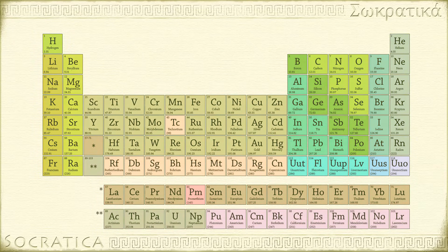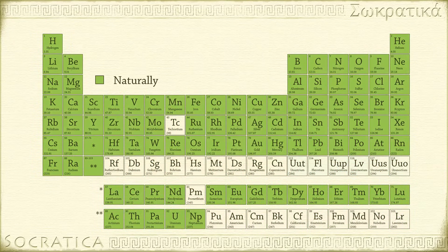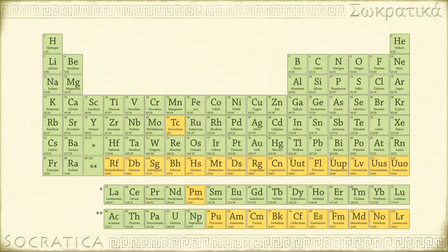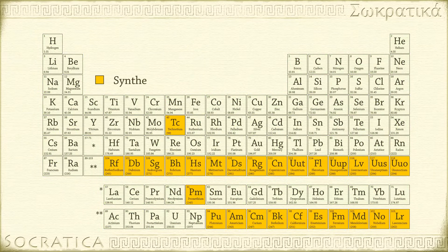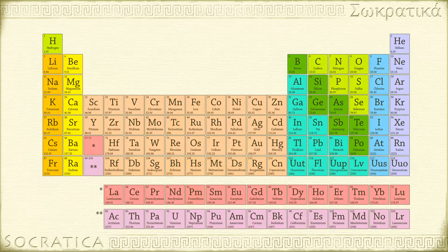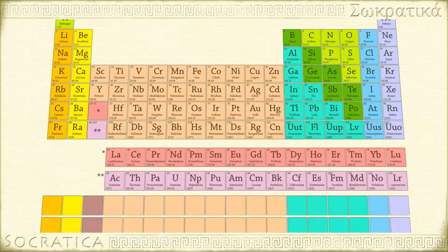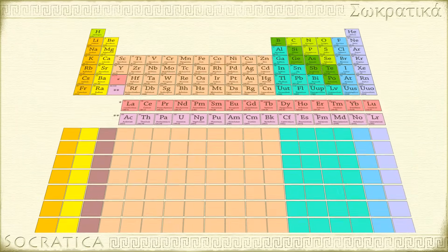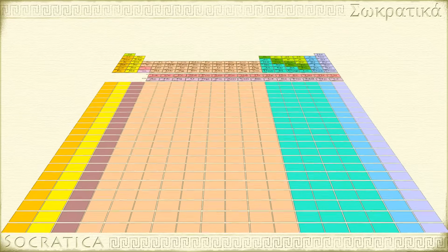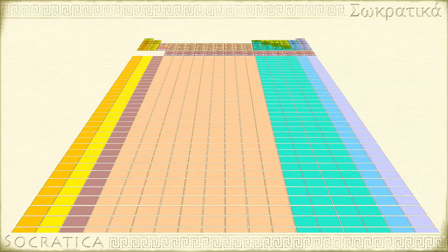There are 92 naturally occurring elements, and many elements not found in nature have been synthesized. We're running out of room to put all the new elements — we might just have to enlarge the periodic table in the near future.